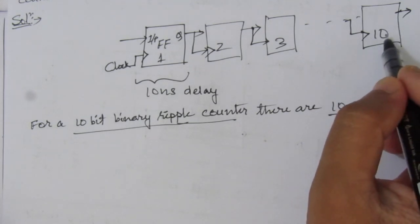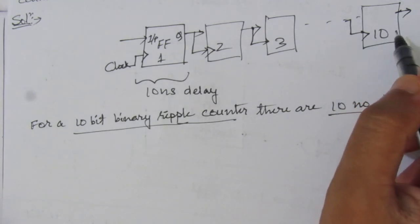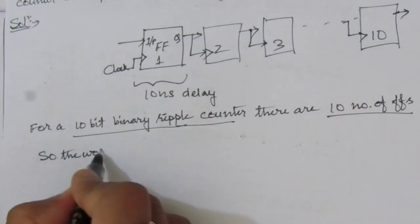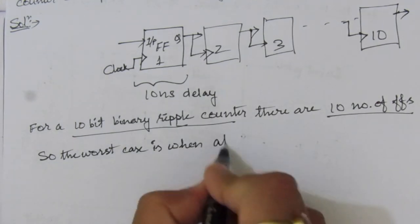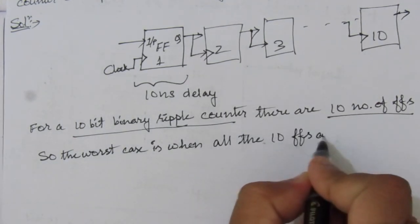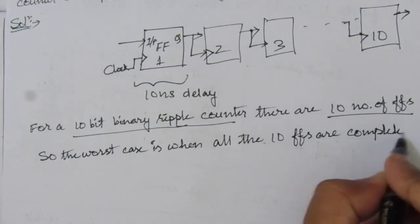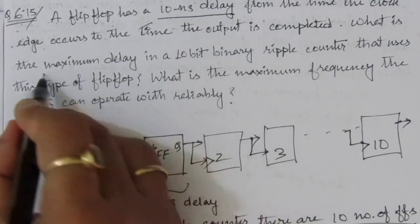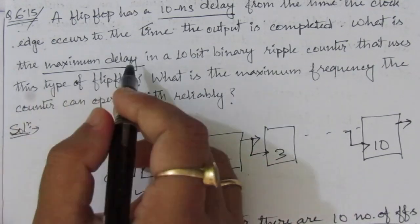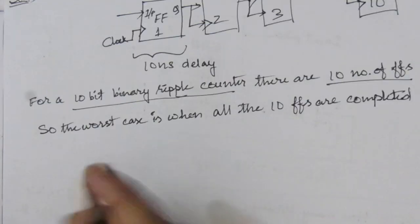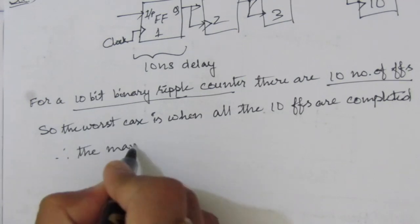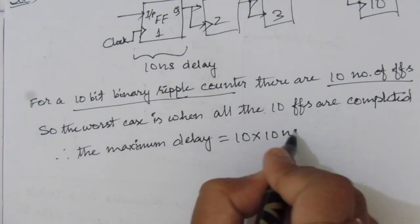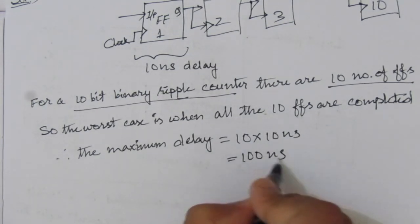For getting the output of the 10th flip-flop, the worst case is when all 10 flip-flops are complemented. We must calculate for the worst case because we need the maximum delay. Therefore, the maximum delay equals 10 × 10 nanoseconds = 100 nanoseconds.